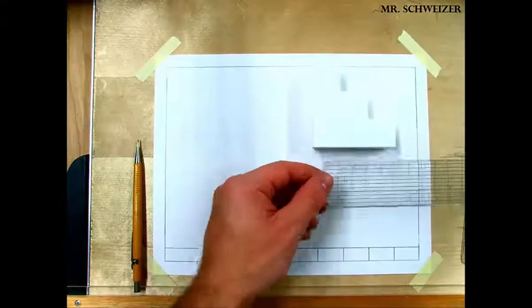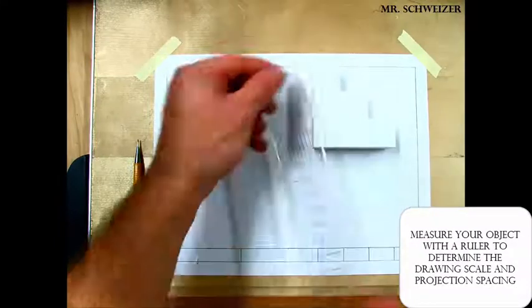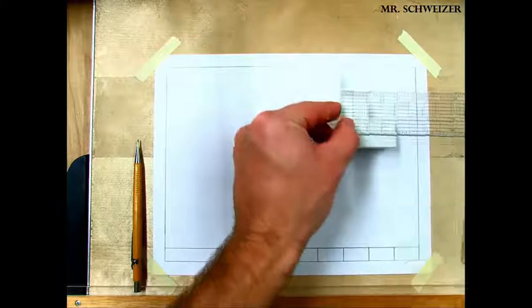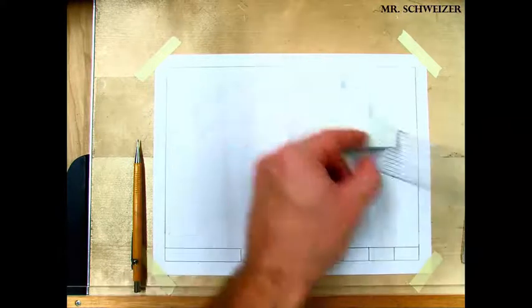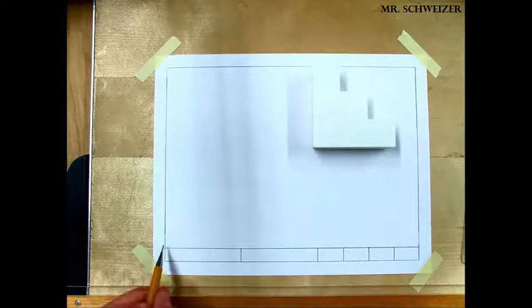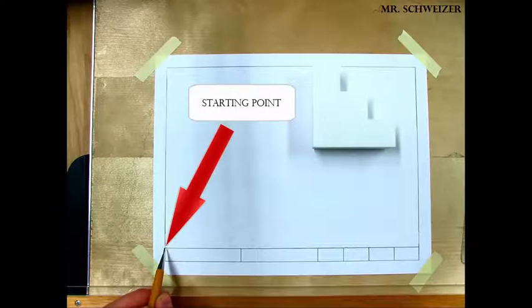We want to start measuring our object so we can start laying out where our drawing is going to start and the spacing of all of our projections so that it's represented most accurately on our paper. The upper left corner of our title block we're going to consider this our starting point.